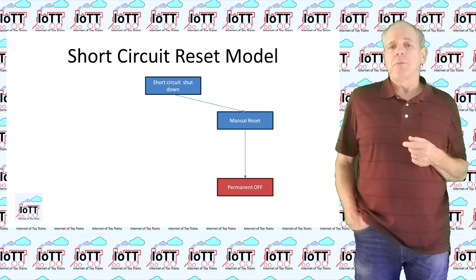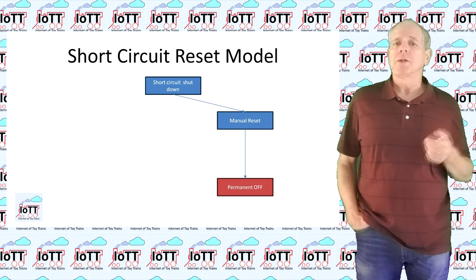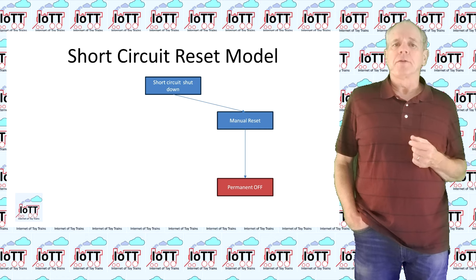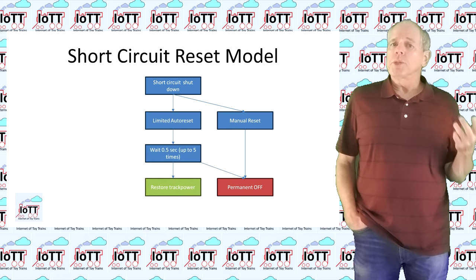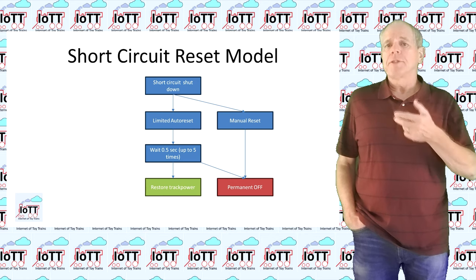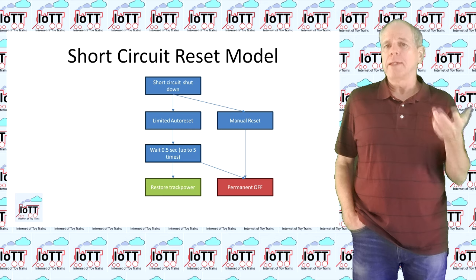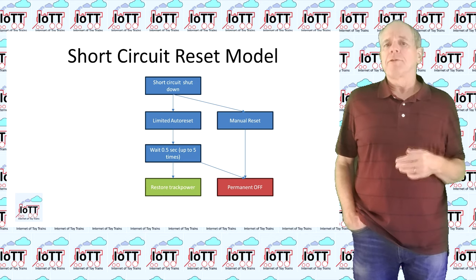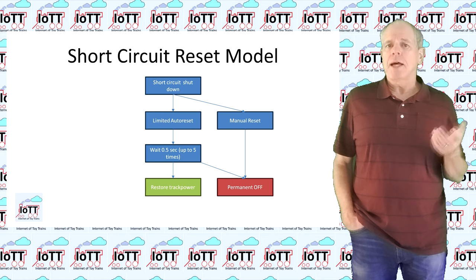In manual reset mode, the booster remains shut until the user sends a reset command via the command interface. In limited auto reset mode, the booster switches on after half a second. If the short circuit is still there, it shuts down and tries a third time after another half second. If not successful, it shuts down permanently, and a manual reset by the user is needed.